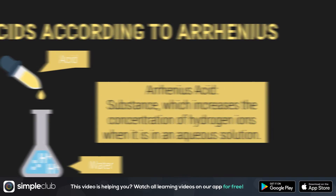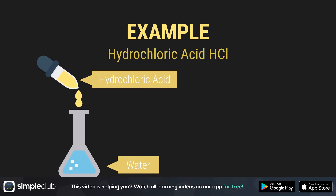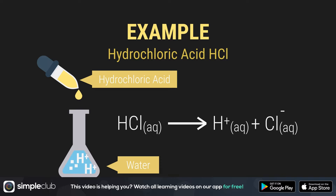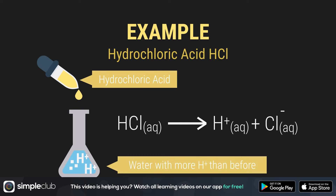We're going to take hydrochloric acid, or HCl, as our example and pour it into water. When something is dissolved in water, we write AQ in brackets next to it — that's short for aqueous, meaning dissolved in water. When hydrochloric acid is added to water, it dissolves into H-plus and Cl-minus. So there are now more H-plus ions in the water than before. By the way, the Cl-minus is called the acid residue. The concentration of hydrogen ions has increased; therefore, according to Arrhenius, hydrochloric acid is an acid.